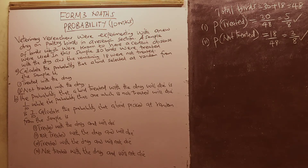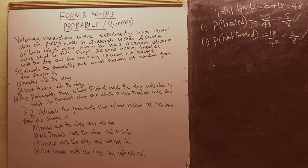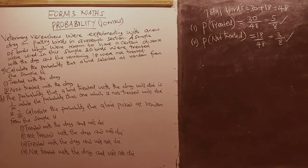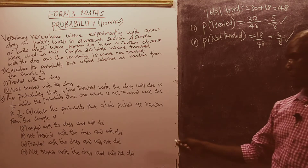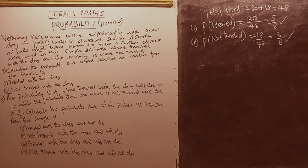Then Part B: the probability that a bird treated with the drug will die is 1 over 10, while the probability that one which is not treated will die is 7 over 10. Calculate the probability that a bird picked at random from the sample is — Roman 1: treated and will die; Roman 2: not treated and will die; Roman 3: treated and will not die; Roman 4: not treated and will not die.